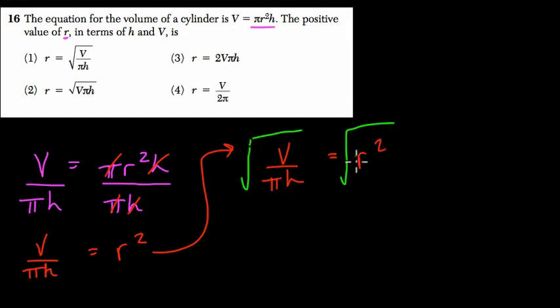The square root of anything squared is the number itself. So the square root of r² is just r. And we can't really evaluate yet the square root of V over πh. We don't know what those values are, so we can't break it down any further.